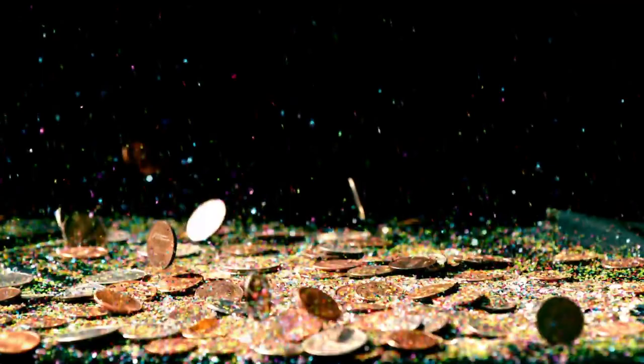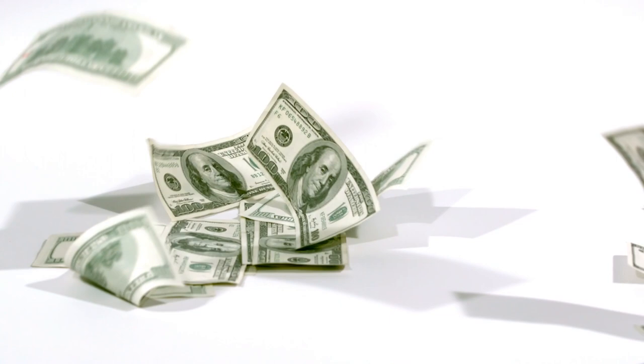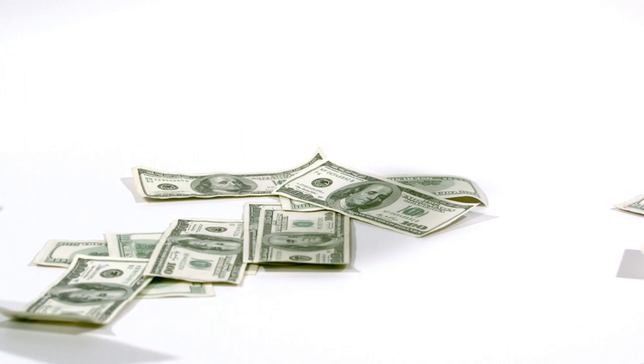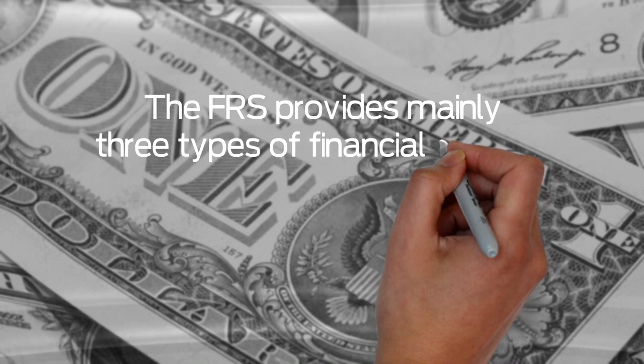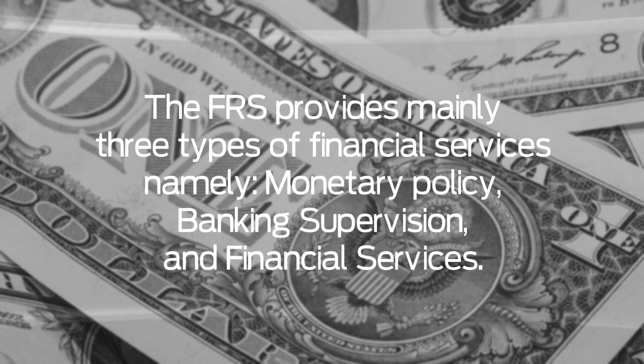While the FRS regulates the financial and economic system of the United States, it also provides banking services for the member banks and institutions, including government banks and national financial institutions. The FRS provides mainly three types of financial services namely, monetary policy, banking supervision and financial services.